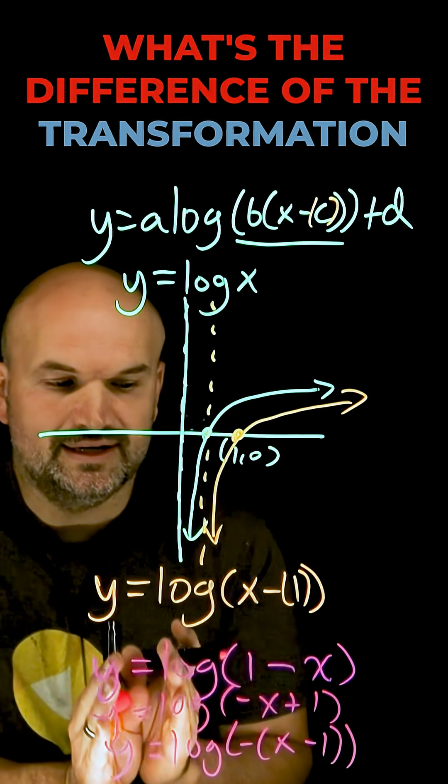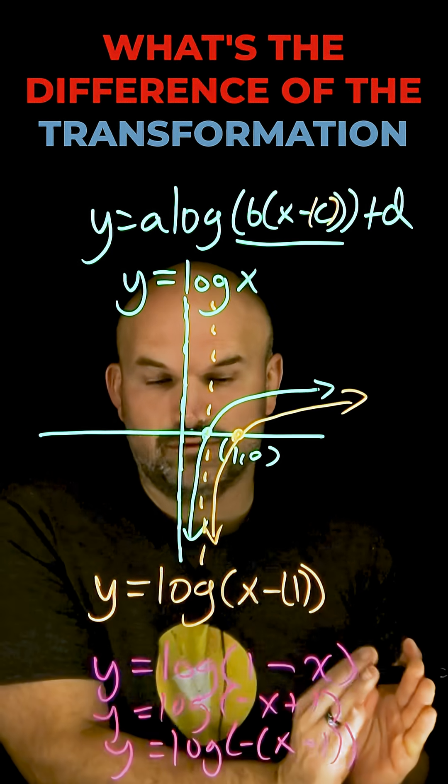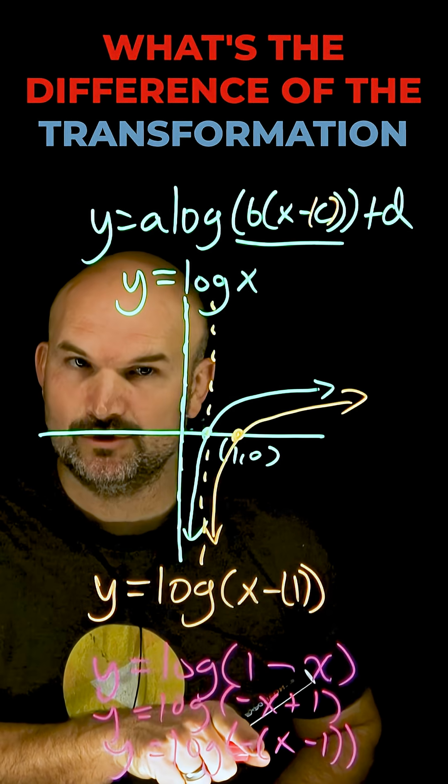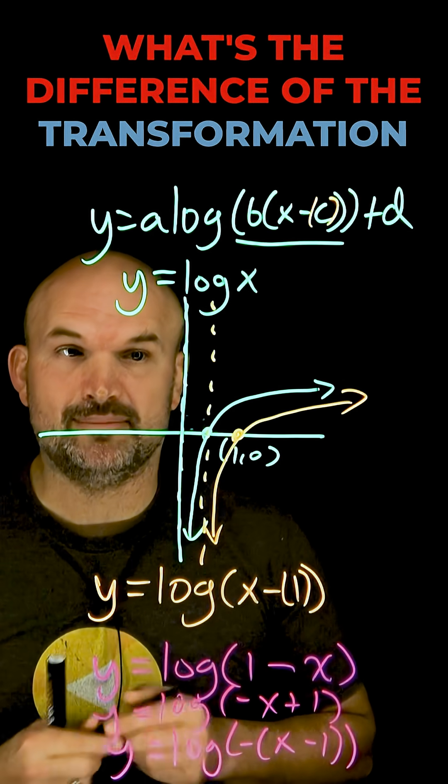So we know the negative 1 is going to be shifting my graph one unit to the right. But what is this negative that's being multiplied going to do? Well that is going to be a reflection about my y-axis.